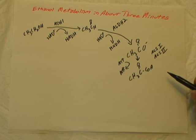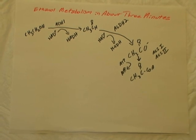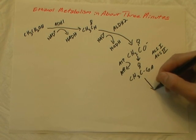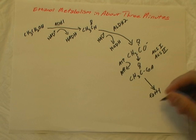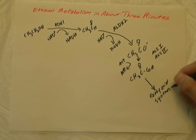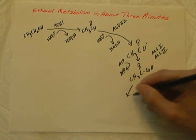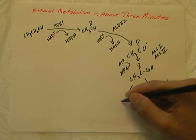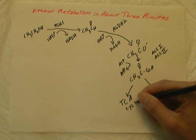The fate of the acetyl-CoA: it can go into two different pathways. If it stays in the liver, it can be used to synthesize fatty acids. And if it goes to energy-requiring tissues such as the heart or muscle, it can enter the tricarboxylic acid cycle.